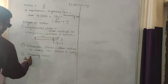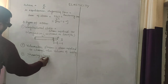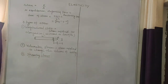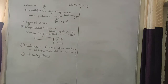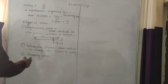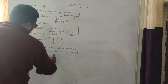The third one is shearing stress, also called tangential stress. This stress acts tangentially to a surface so that the shape of the body changes but the volume remains the same.